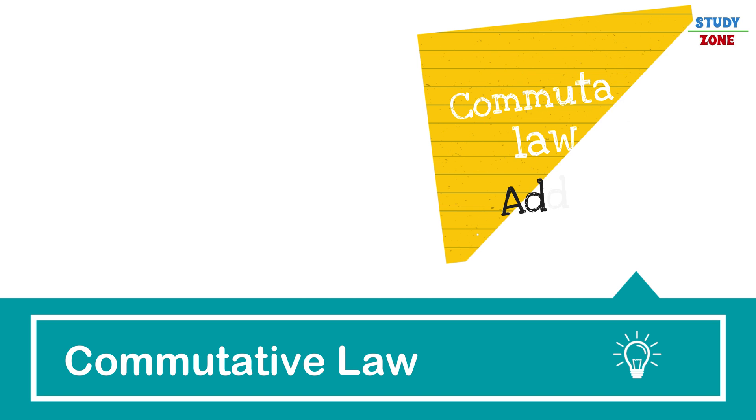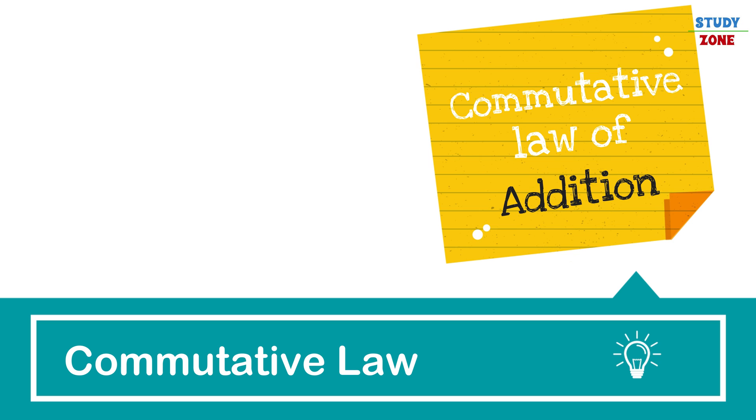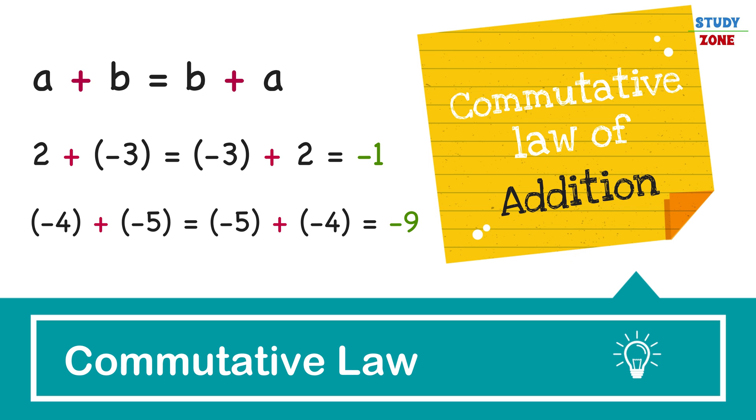Let us talk about commutative law of addition. It says a plus b is equal to b plus a. Either you add a to b or b to a, the output will always be same. It is applicable on all numbers including negative numbers. For example, adding 2 and minus 3 or minus 3 and 2 will result in minus 1 in both cases. Even if both numbers are negative, the law will still be valid on addition.